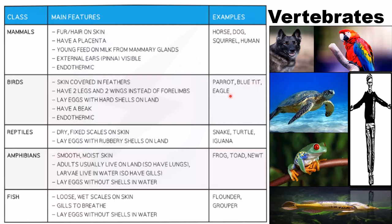If you look at the class reptile, you can see dry fixed scales on skin. They lay eggs with rubbery shells on land — note that birds have hard shells while reptiles have rubbery shells. Examples are snake, turtle, and iguana.